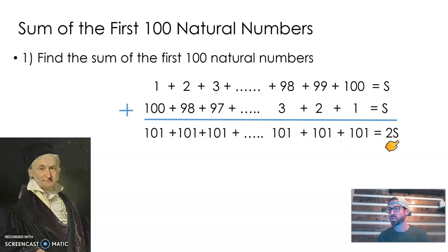Now keep in mind, this is going to be twice the sum we want because we took the sum and added it to itself. But you got to ask yourself, how many times are we adding 101? You might be saying, 100 times, right? Because there were 100 numbers we were adding.